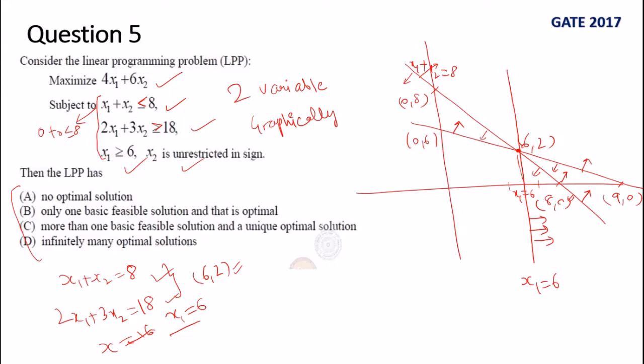Now you look at the non-negativity restriction. x₂ is unrestricted - x₁ is obviously positive but x₂ is unrestricted in sign. That means x₂ can have negative value also. This is the x₂ axis, so x₂ can be below this, which means that we can also mark the region above the x-axis, we can also mark the region below the x-axis.